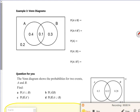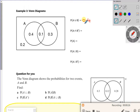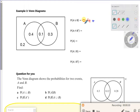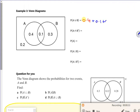Let's have a look. So A or B is just the three values in the middle added together: 0.4 plus 0.1 plus 0.3 equals 0.8.